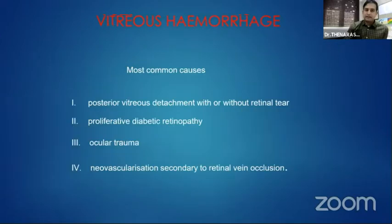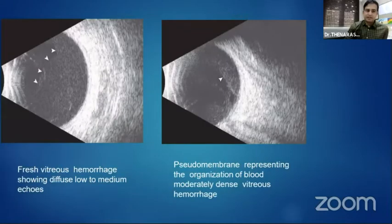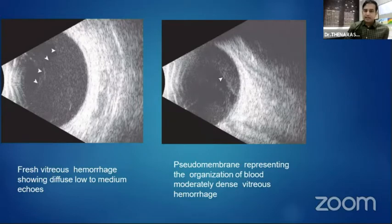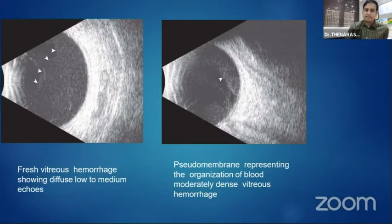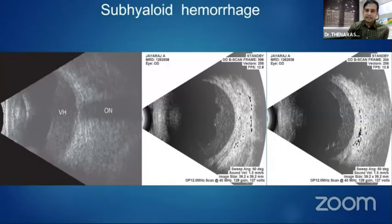With vitreous hemorrhage, there are different causes — proliferative diabetic retinopathy, PVD-induced, or ocular trauma. Ultrasound helps in diagnosis and management. A fresh vitreous hemorrhage shows low-to-medium moderate vitreous echoes, whereas a second picture shows liquefied vitreous with pseudomembrane formation. In diabetic vitreous hemorrhage, we can also notice sub-hyaloid hemorrhage, seen as moderate-to-severe vitreous dot echoes in front of the retina.